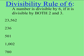Now let's go to the first example. In the number 23,562, it is an even number, therefore 2 goes into it. Now let's see if 3 goes into this number. Remember, the rule of 3 is: add up all the numbers, and if 3 goes into the sum, then 3 goes into the original number.